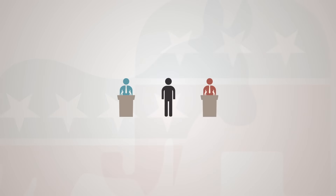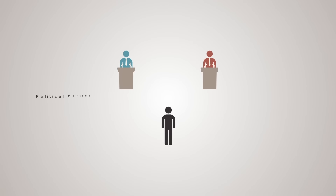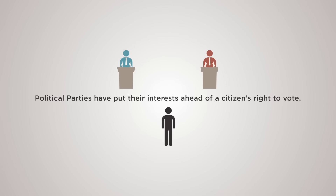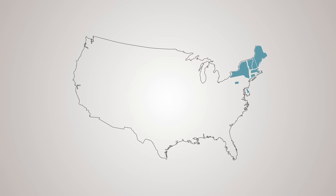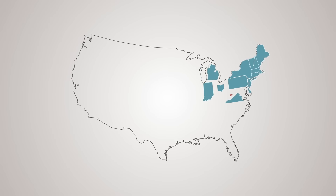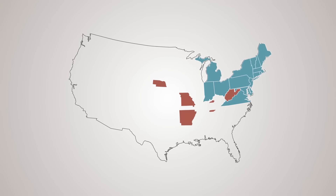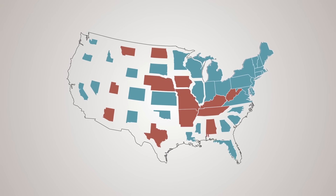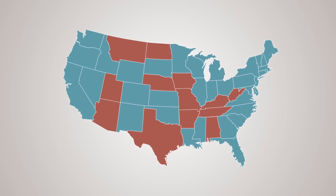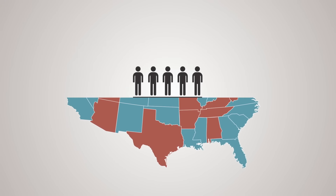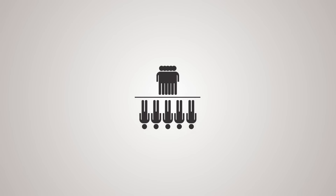But over the years, political parties have worked to put their interests ahead of a citizen's right to vote. Today in the United States, we have a two-party system – Republicans and Democrats. They are so powerful that they control who can and can't vote. How do they do that?